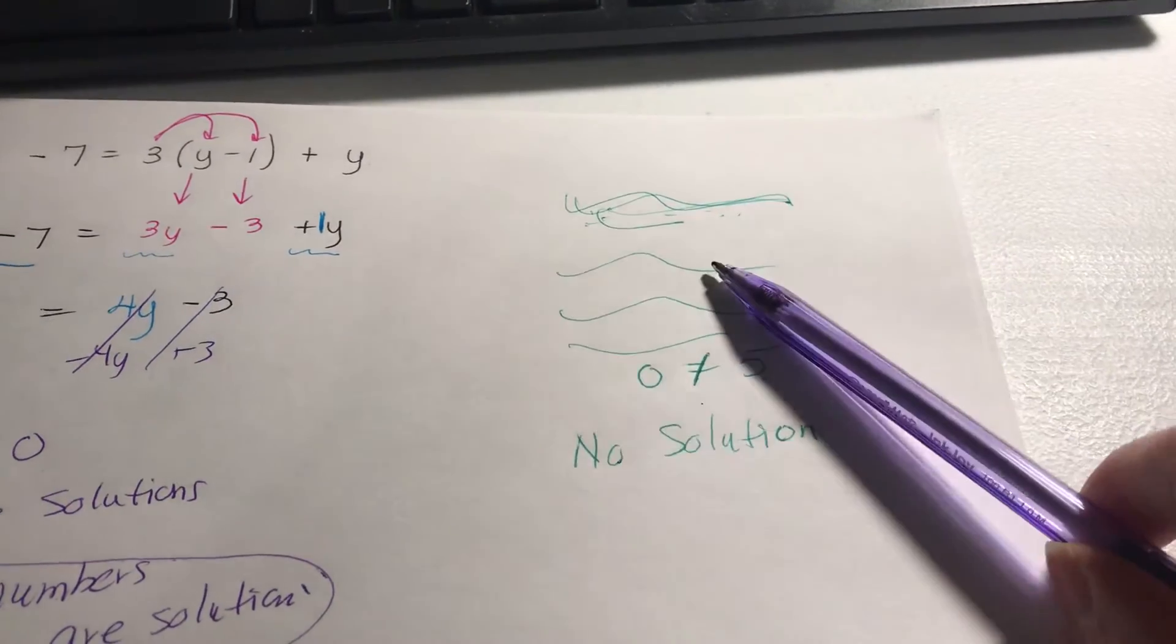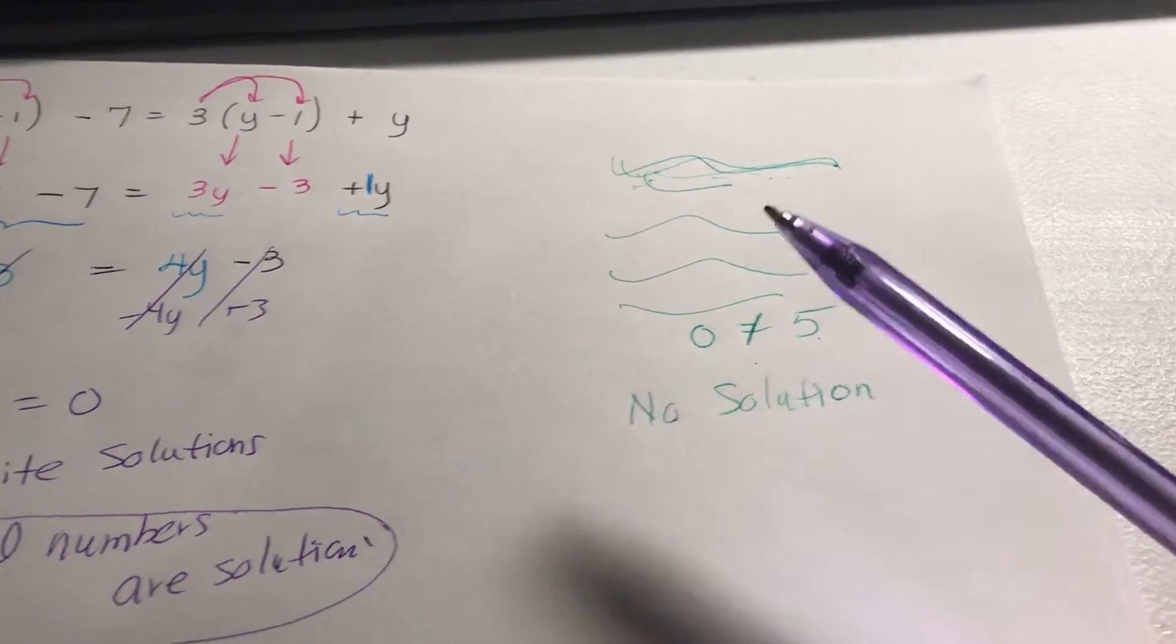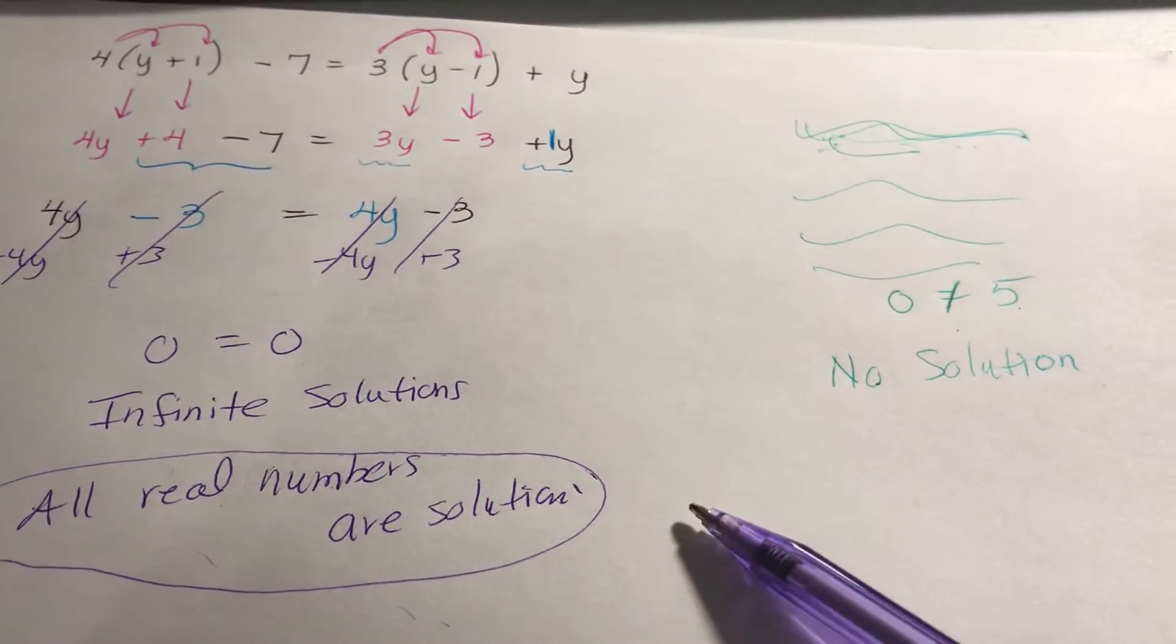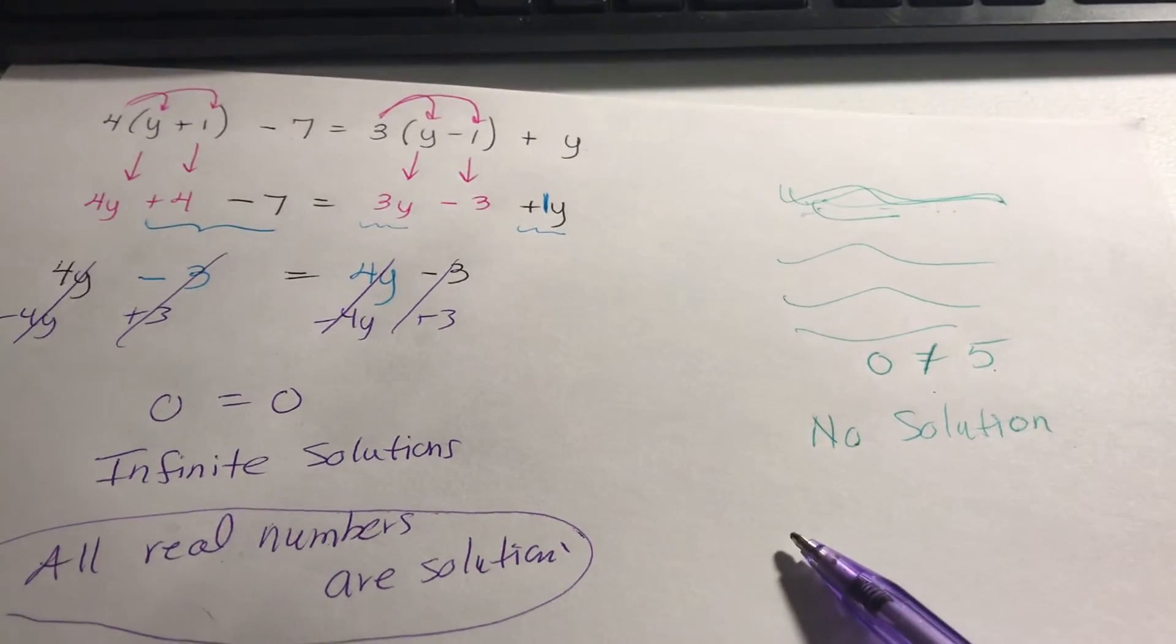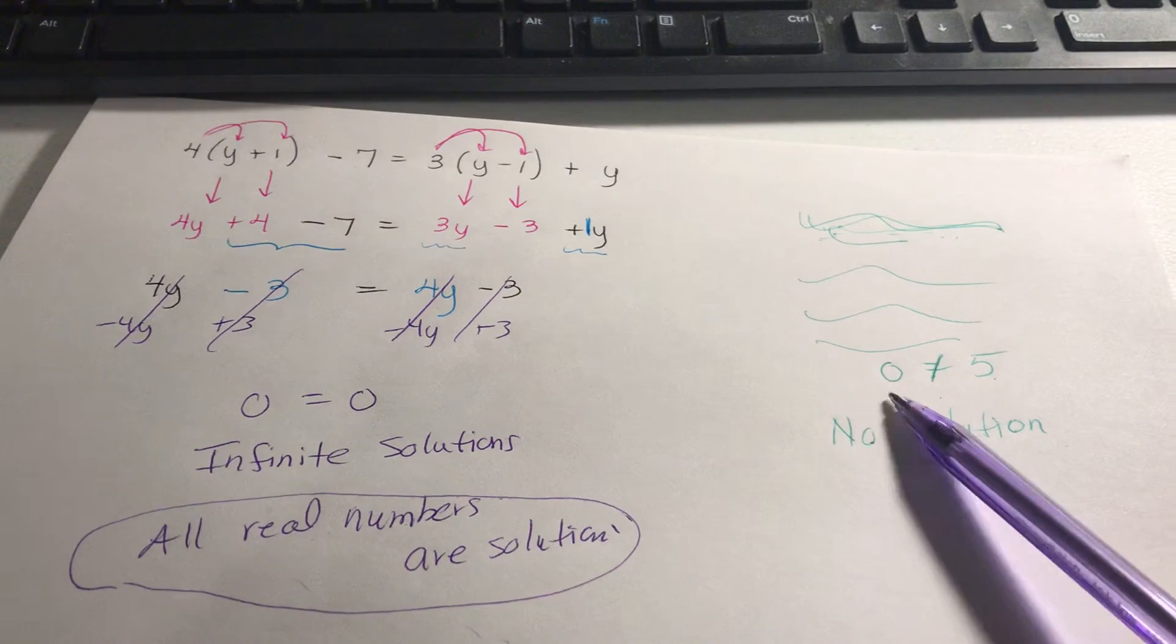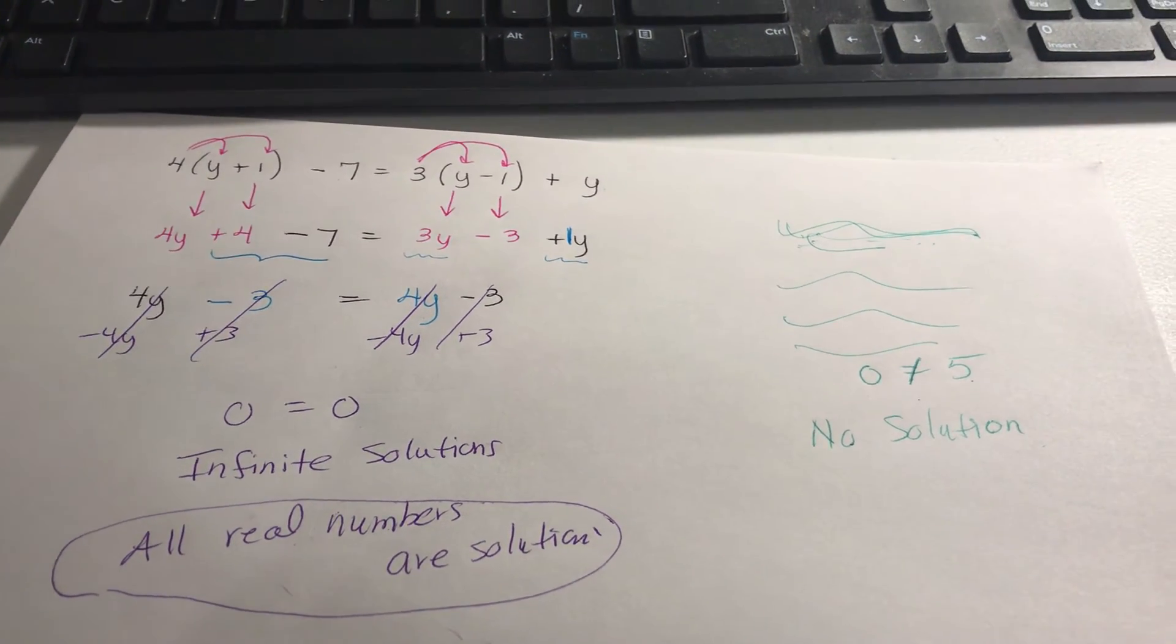But over here no number will ever check. Period. Nobody will ever check. And if you solve it and you've gotten like y equals 2 then that means 2 is the only number. So those are these two are special cases when this happens and they happen every once in a while. So I hope that explains that for you.